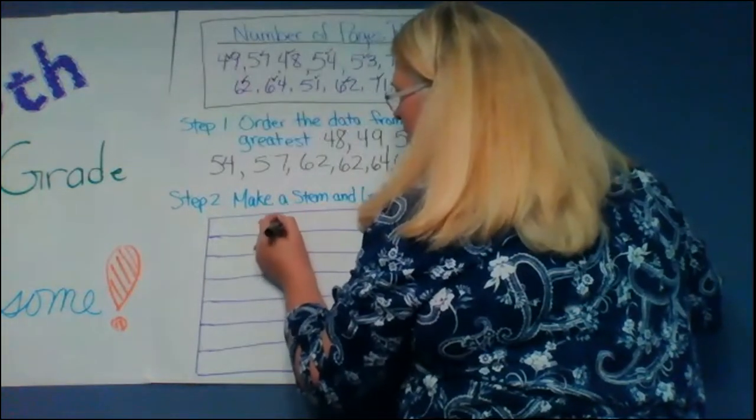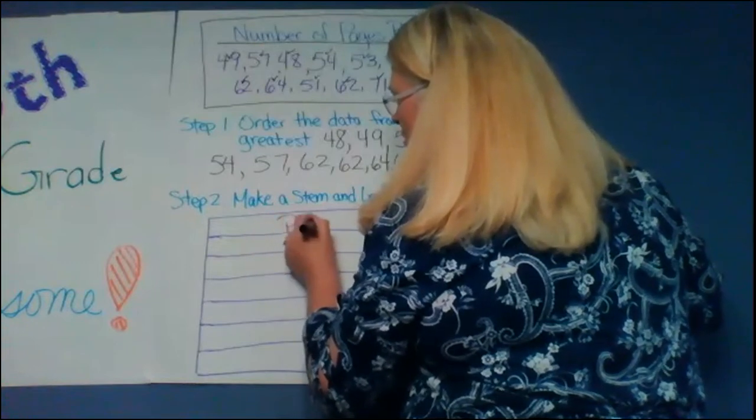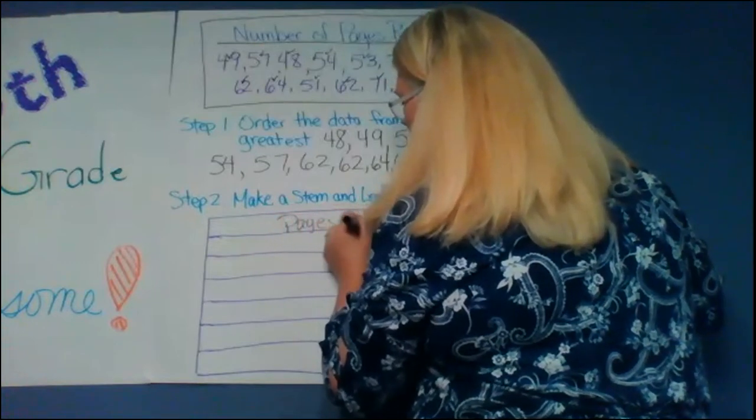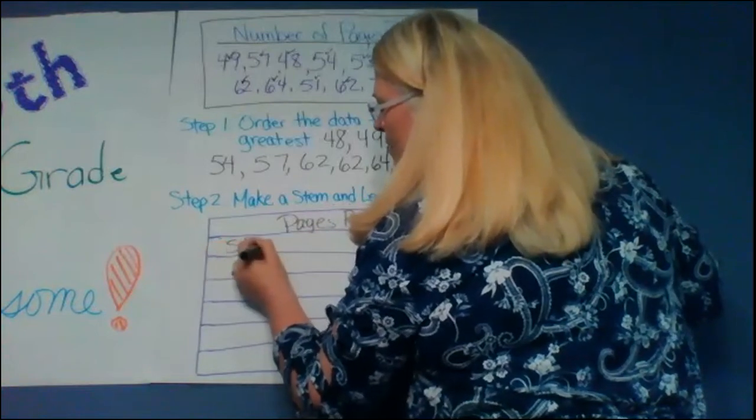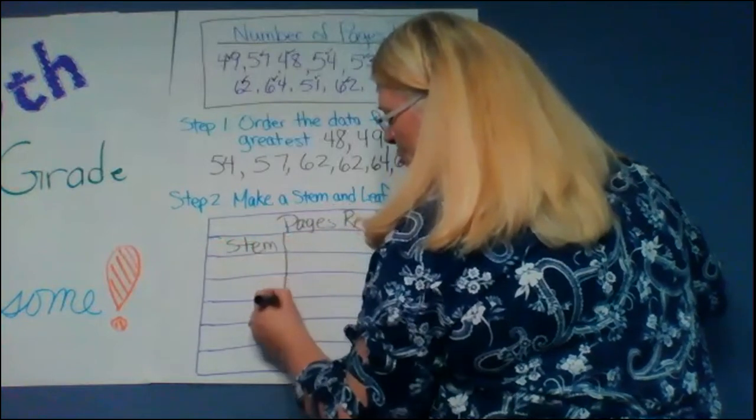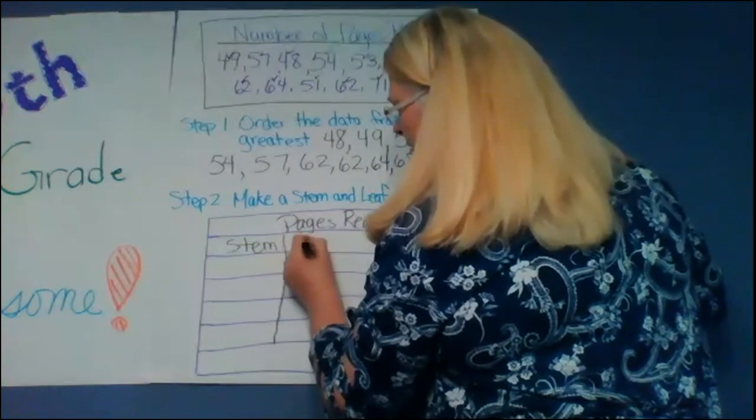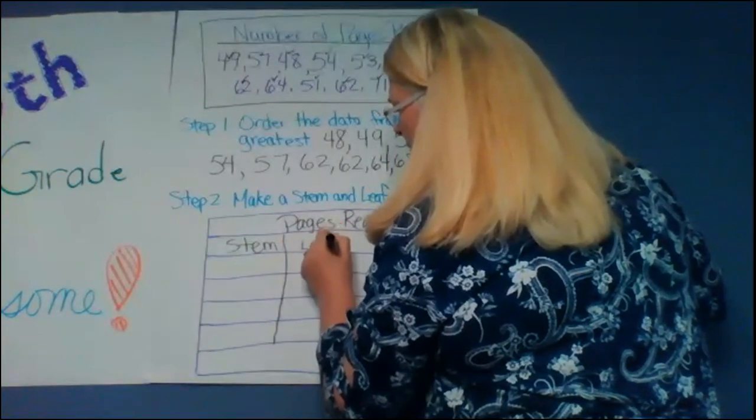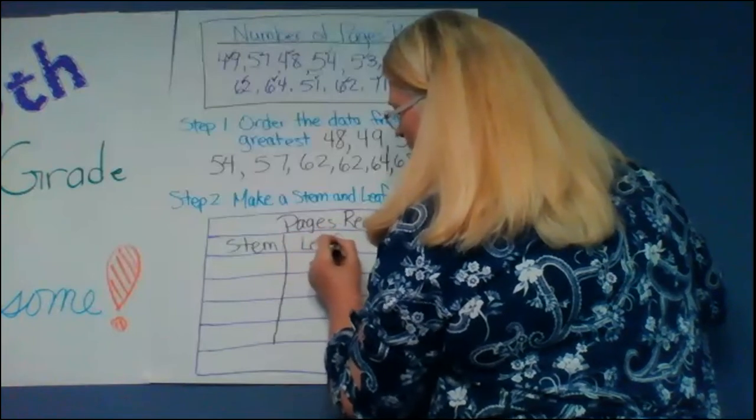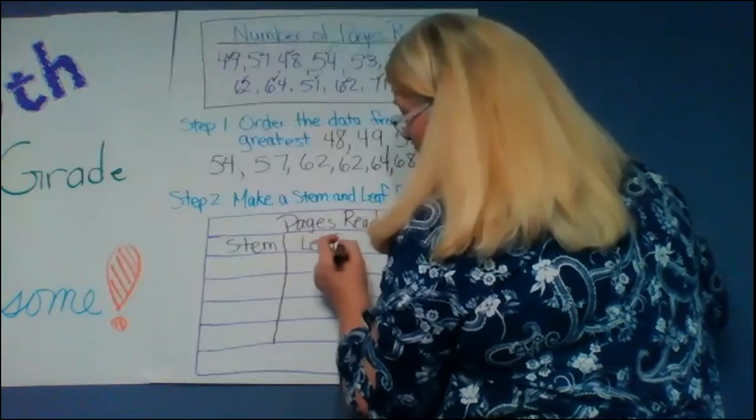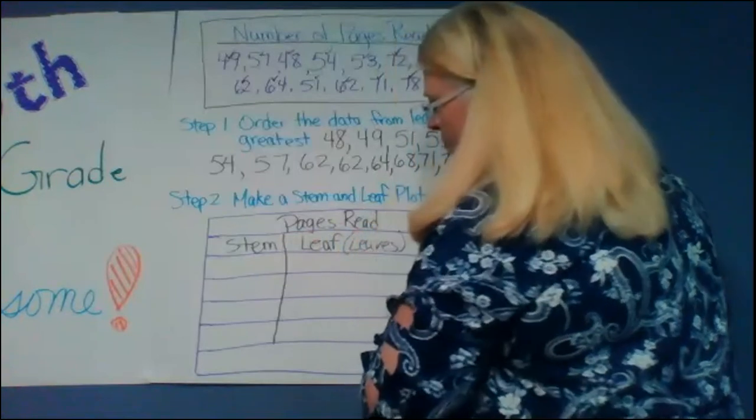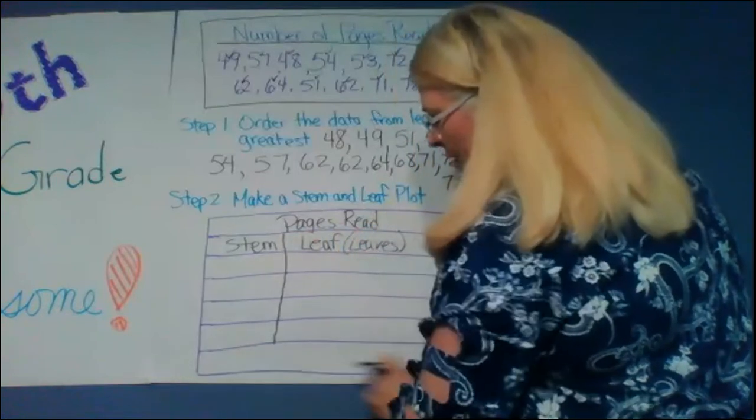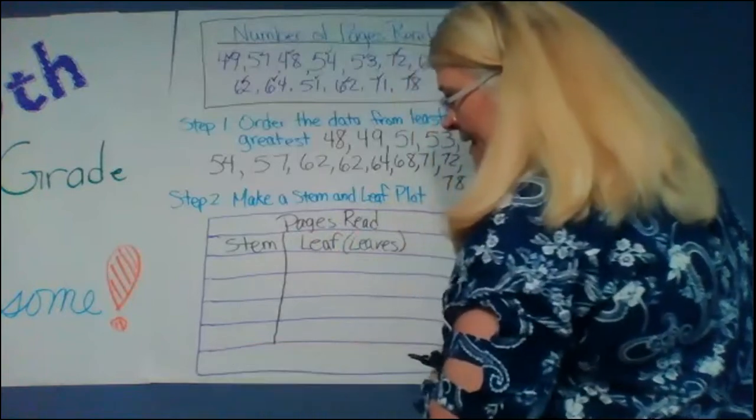So this is pages read and then I do stem. Draw a line and you can also write leaves. You can also write leaves because it is more than one. This bottom line is where I'm going to reserve my key.